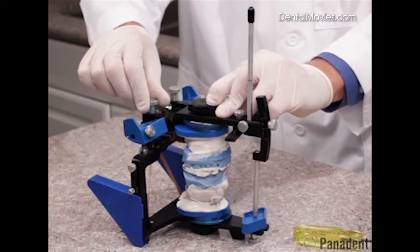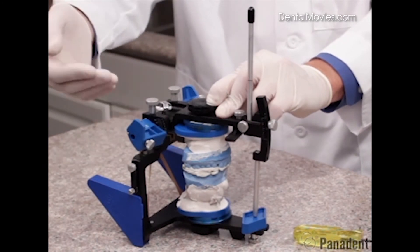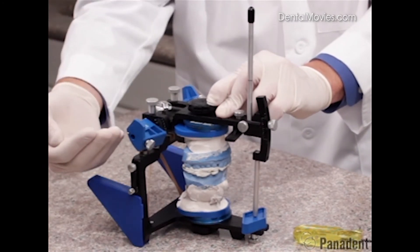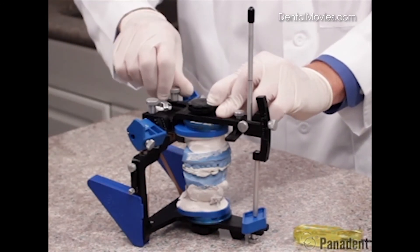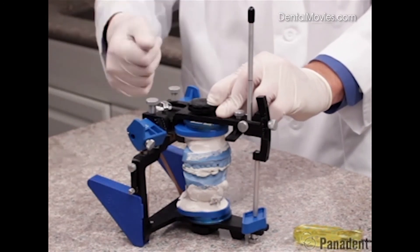We can now loosen the little screw here on the top which allows the motion analog to drop down to where the axis element is moved downward and forward, setting the protrusive angulation into the articulator for both sides.